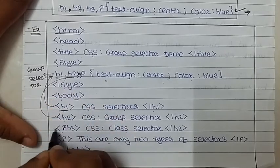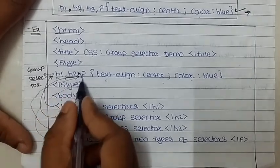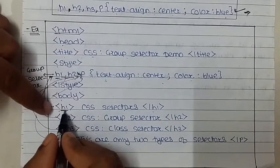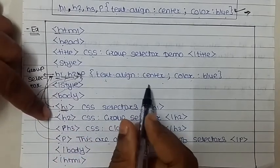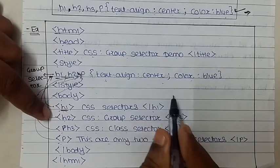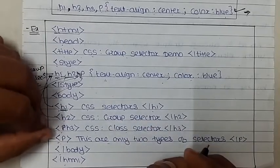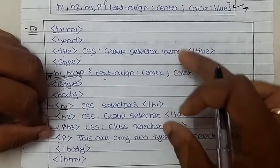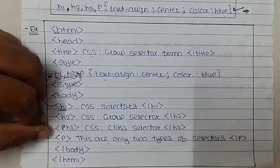When these lines execute, for h1, h2, h3, and p the styling code applies — text-align center and color blue will be applied to that text. We will find out the actual output of this program practically, so let's start.